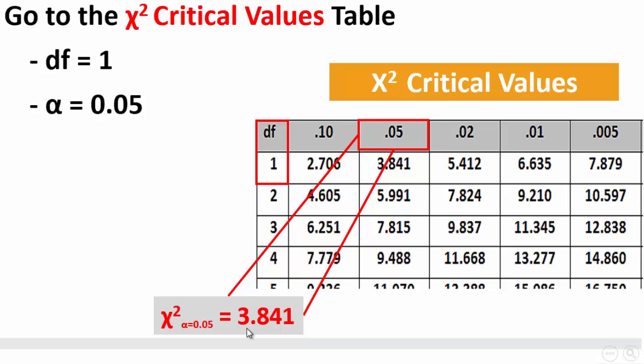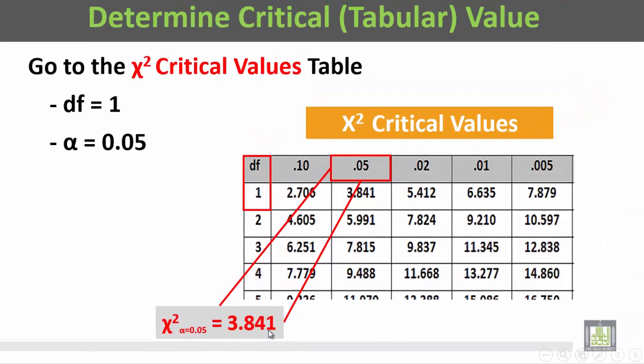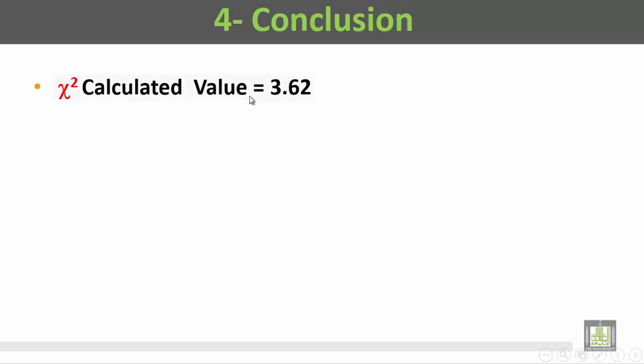The calculated chi-square value is equal to 3.62. The critical value is 3.841.